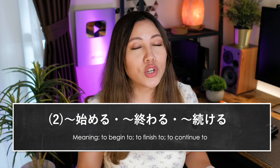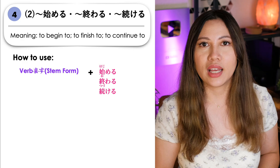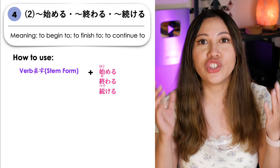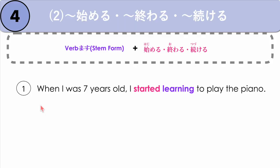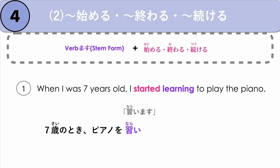Just like how we use dasu, we also use these with just the stem form of the verb. Stem means removing masu from the verb, and then we attach hajimeru, owaru, or tsuzukeru. For example: when I was seven years old, I started learning to play the piano. Nanasai no toki, piano o — our verb is to learn something, which is naraimasu. We get the stem narai, plus to start: hajimemashita. Nanasai no toki, piano o narai hajimemashita.